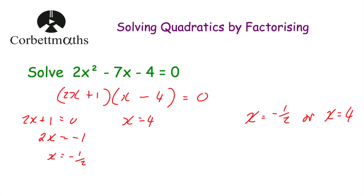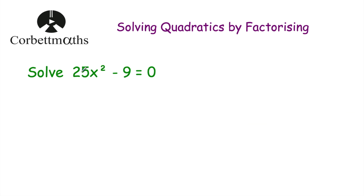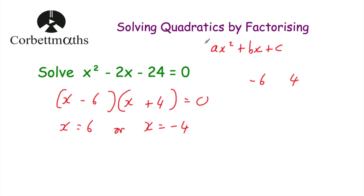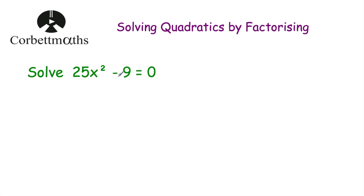Our next question: solve 25x² - 9 = 0. This one looks a little different — unlike the previous questions that had an ax² term, an x term, and a constant, this one only has an x² term and a constant with no x term. This is a special type of factorization — the difference of two squares. If you have something squared subtract something squared, you can factorize it using the difference of two squares.